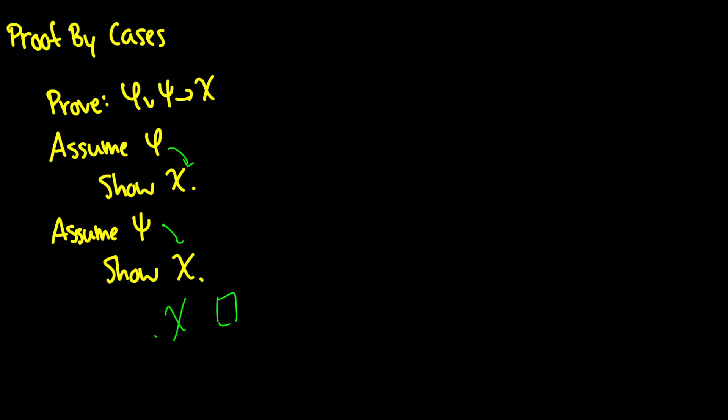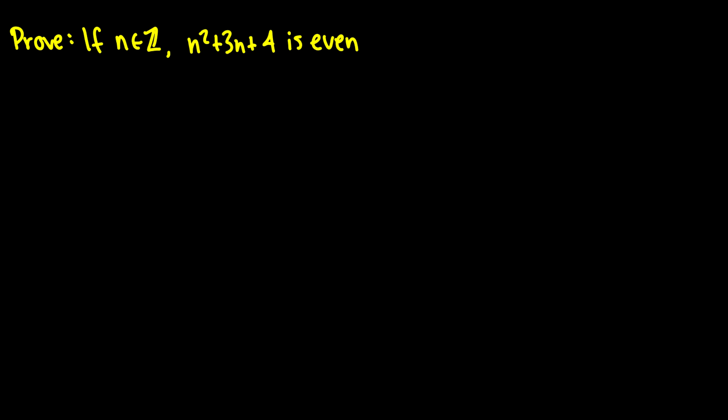As a better example, we have if n is an integer, then n squared plus 3n plus 4 is even. Now why is this a proof by case?